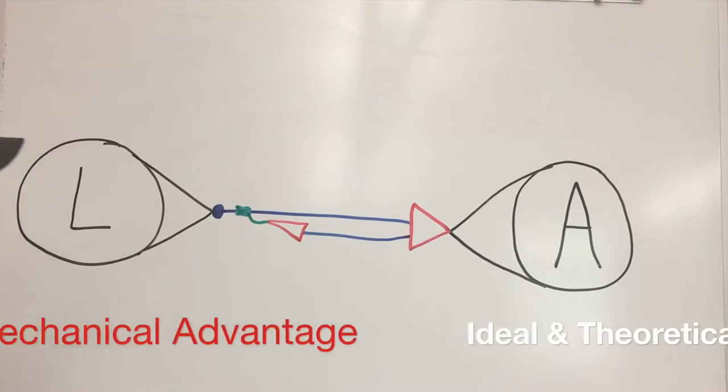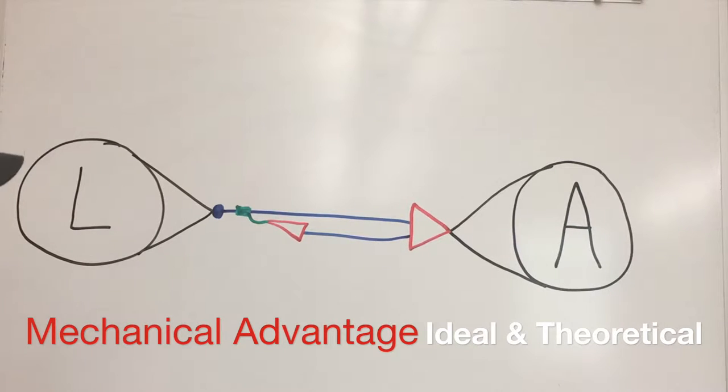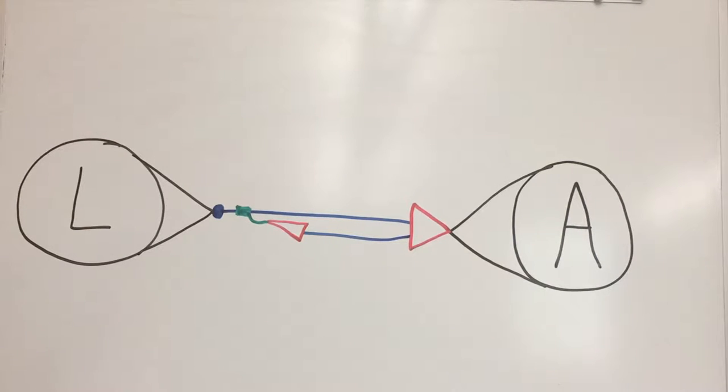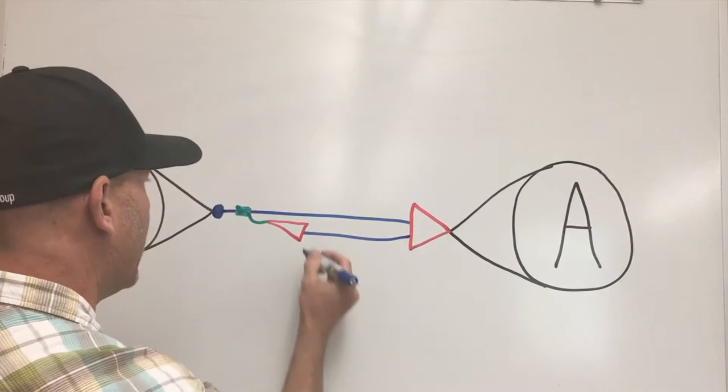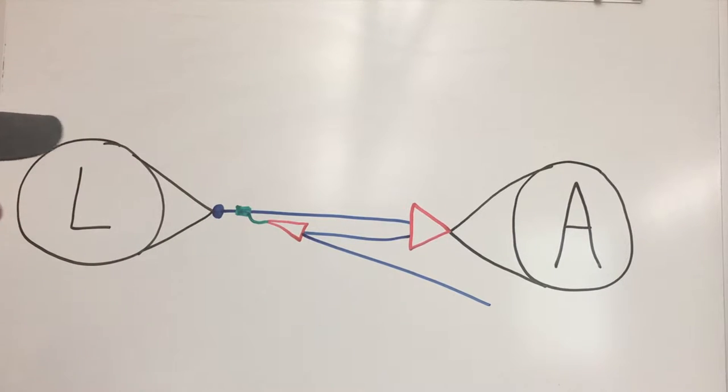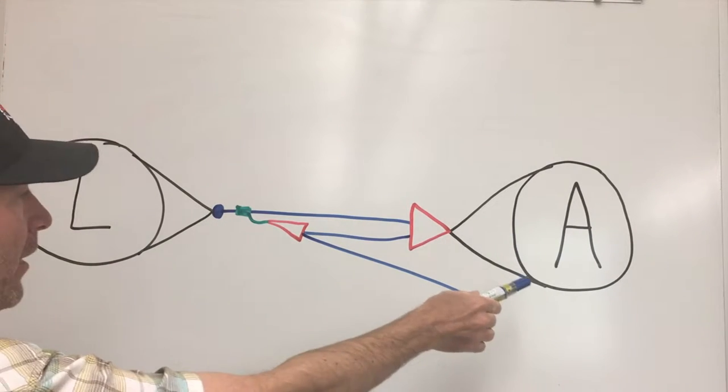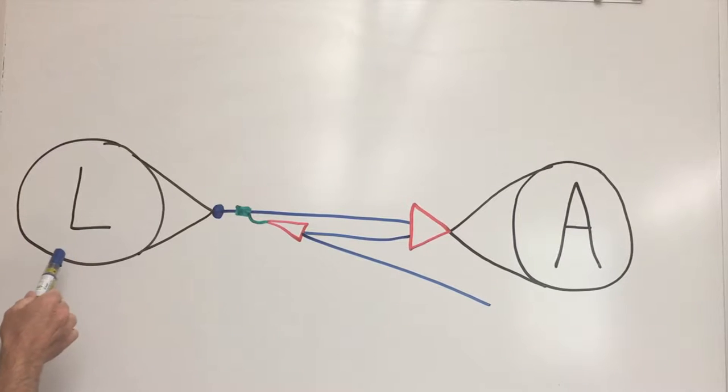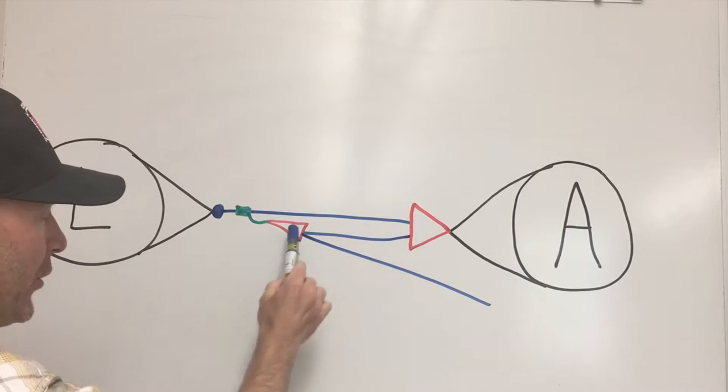Okay, so let's talk about the differences between ideal, theoretical, and actual mechanical advantage systems. Here we have an ideal mechanical advantage system setup. We've got our anchor over here, we've got our load, the red triangles are the pulleys.